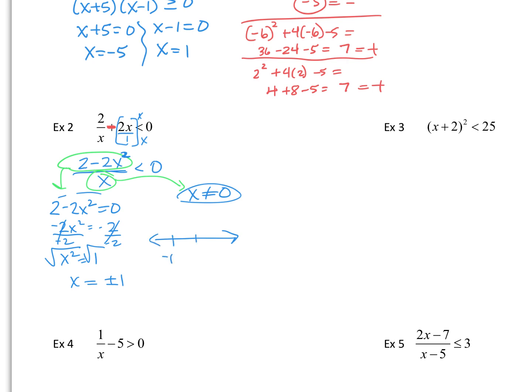Here's negative 1, here's 0, and here's 1. Since 0 cannot equal 0, this one has to be an open circle. The others — notice it's just a less than in our original equation — so open circles everywhere. Now I need to test points to find out where it's positive and where it's negative. The points between negative 1 and 0 would be fractions, and I don't really feel like substituting fractions.